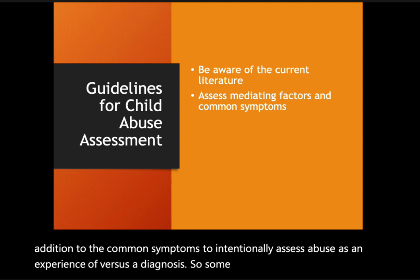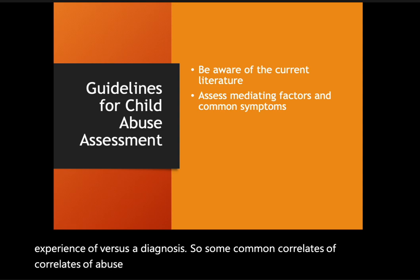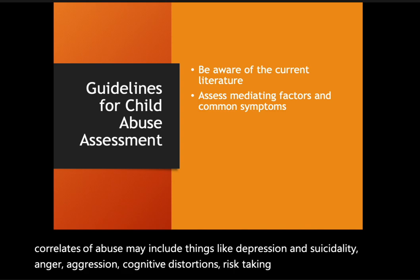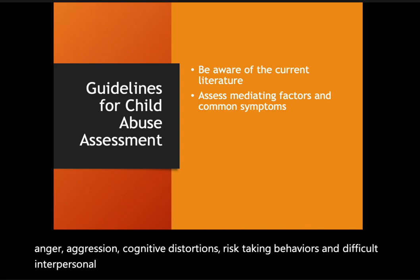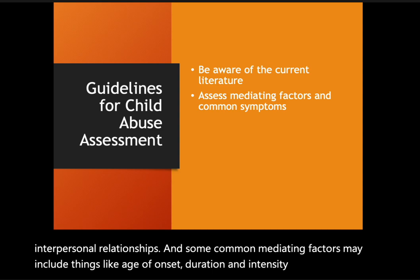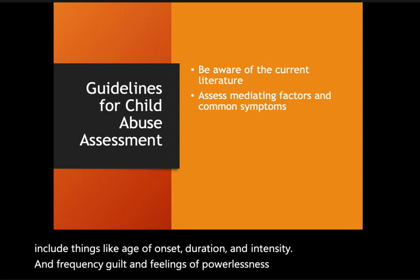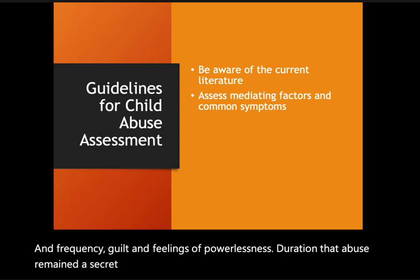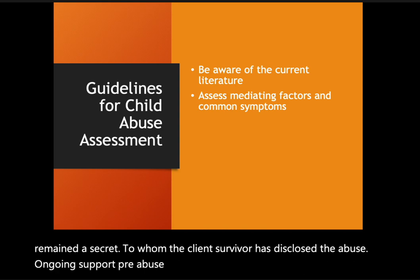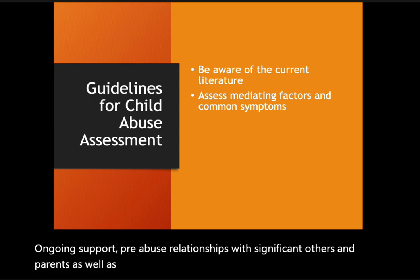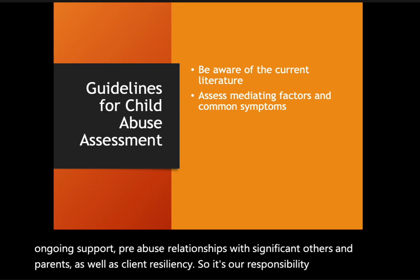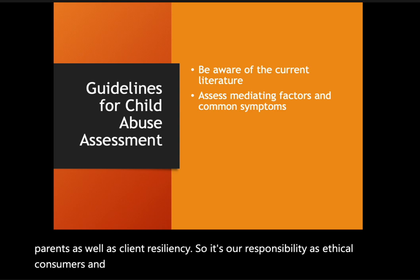Common correlates of abuse may include depression, suicidality, anger, aggression, cognitive distortions, risk-taking behaviors, and difficult interpersonal relationships. Common mediating factors may include age of onset, duration, intensity and frequency, guilt and feelings of powerlessness, duration that abuse remained a secret, to whom the client-survivor has disclosed the abuse, ongoing support, pre-abuse relationships with significant others and parents, as well as client resiliency. It's our responsibility as ethical clinicians to assess for both these common symptoms and mediating factors.